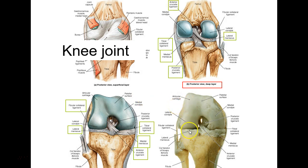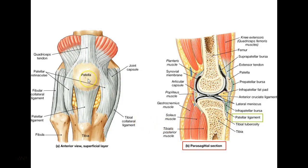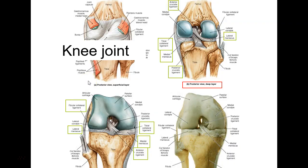There's also a lateral meniscus and a medial meniscus — make sure you identify which is which. The patella is in front, with the patellar ligament going from the patella to the tibia. Looking at the back of the knee you can see the posterior cruciate ligament.